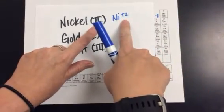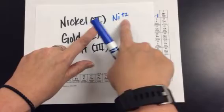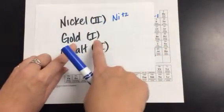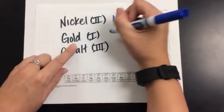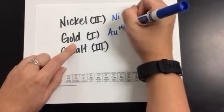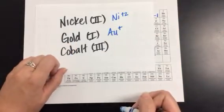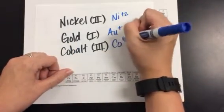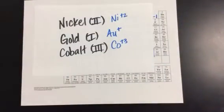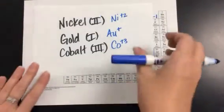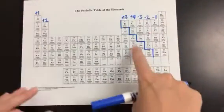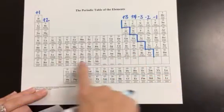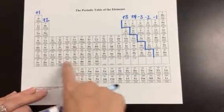All cations are positive charges, so your metals are positive. Gold 1 means that you have Au with a plus 1 charge, and cobalt 3 is cobalt with a positive 3. So your transition metals — and we include tin and lead — those are going to be given to you with Roman numerals.